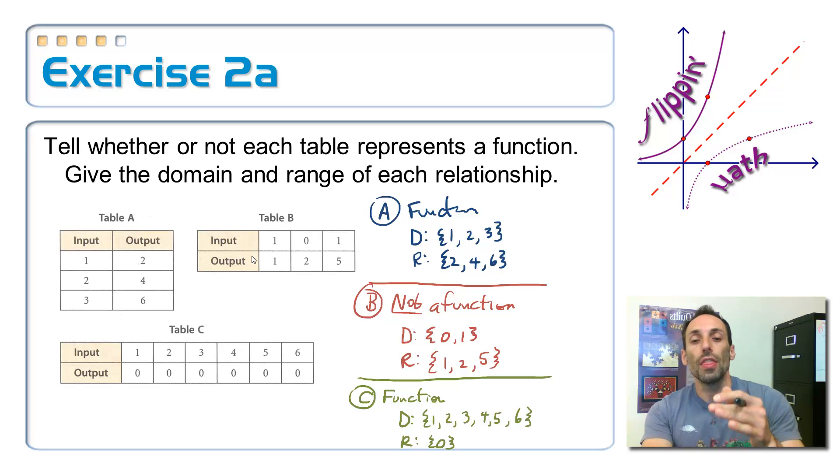Table C. That one is a function. And you might go, oh, but what about the fact that they're all going to zero? That's okay, remember, because every input has just one output. What does the number one go with? Just zero. Doesn't go with anything else. Number two just goes with zero. So, in each one of these cases, every boy has only one girlfriend. It's just that they all seem to have the same girlfriend. So it still makes a function.